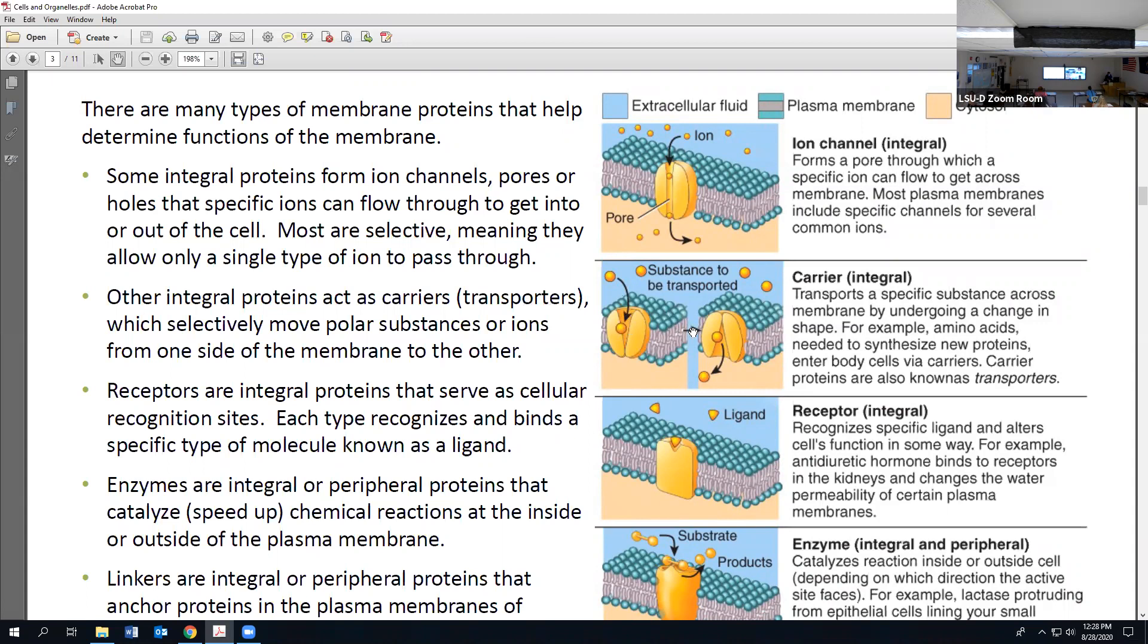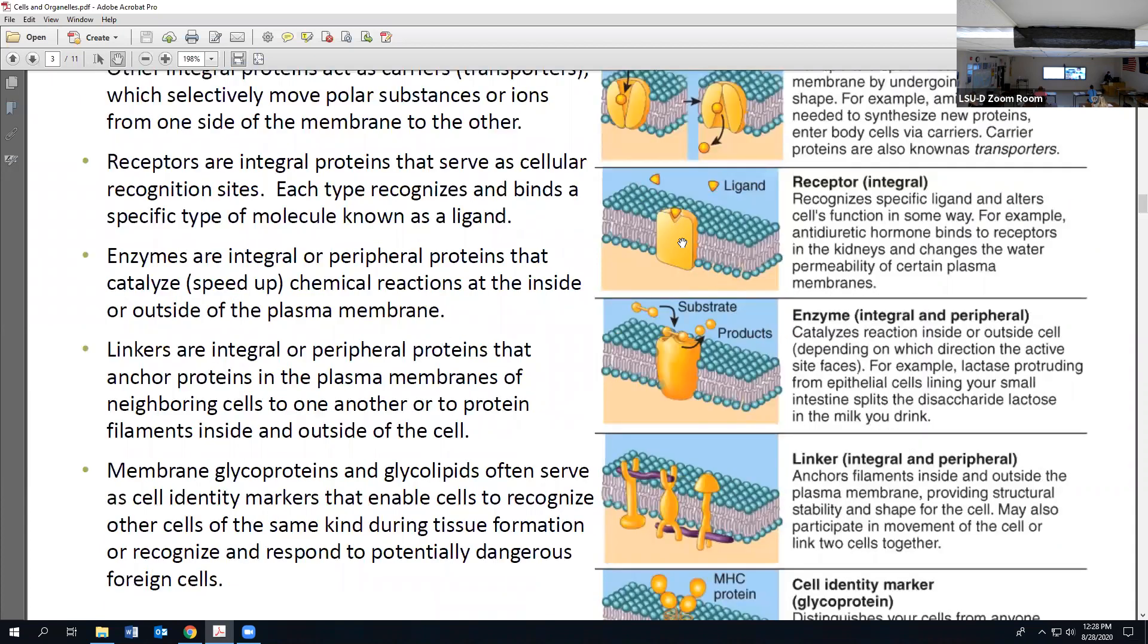The difference between the two relates to what happens to the protein when the substance moves in or out. With channels, the protein never changes its shape, like the doorway frame never moves when we come in and out. Some channels have a gate or door that only opens in certain situations, but the protein itself doesn't change shape. Carriers or transporters change shape physically over time, spitting the substance out on the other side.